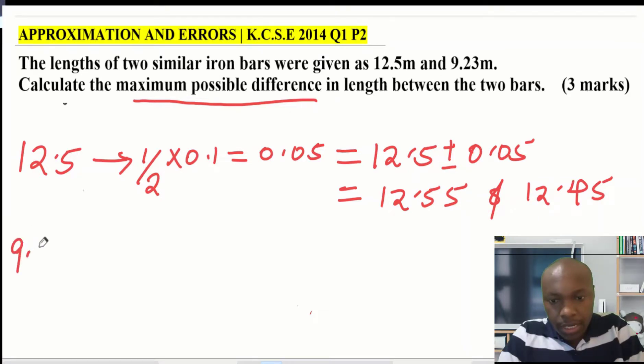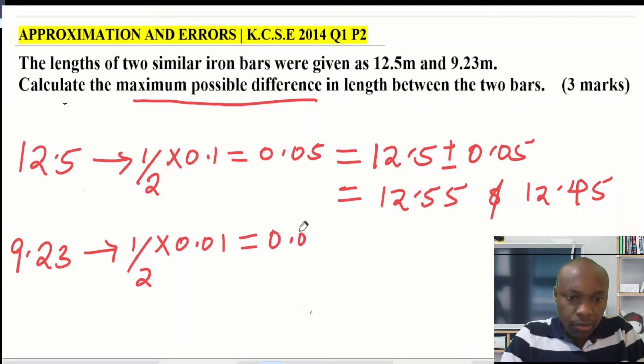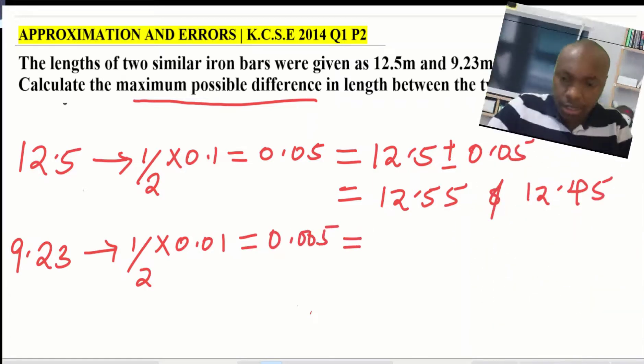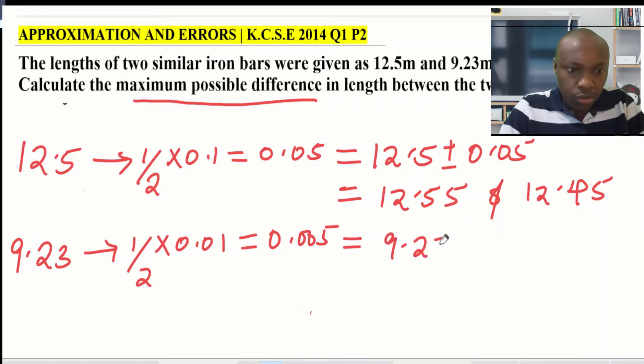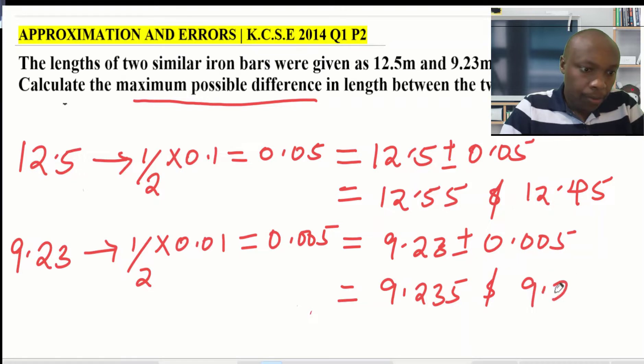Then you go to the other one, 9.23. This one, the smallest unit of measurement is 0.01. Therefore, the absolute error in this measurement will be half multiplied by 0.01, and this gives 0.005. This means that 9.23 will lie between 9.23 plus or minus 0.005, and this gives the limits to lie between 9.235 as the upper limit and 9.225. Those are the limits within which these measurements lie.